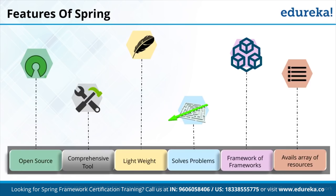The Spring Framework has a layered architecture. The base layer is the testing layer focusing on JUnit for unit testing. Above that is the core container, which includes beans, core, context, and Spring Expression Language. This is the major layer of the Spring Framework, providing inversion of control and dependency injection, which are used by all upper layers and form the core of Spring.